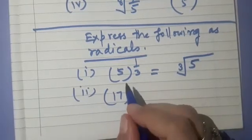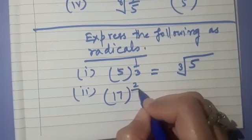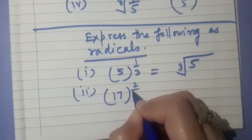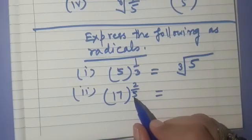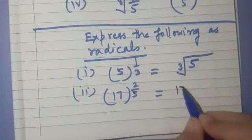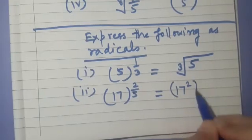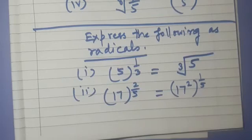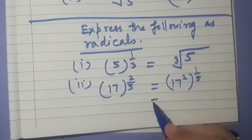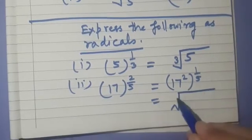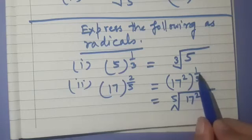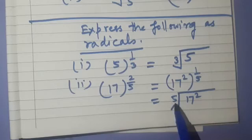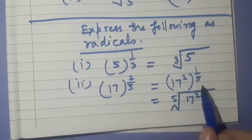Let us take one more example: 17 raised to the power 2 by 5. We can write this as 17 squared raised to the power 1 by 5. Now we can easily write it as the 5th root of 17 squared. Here 5 is the index.